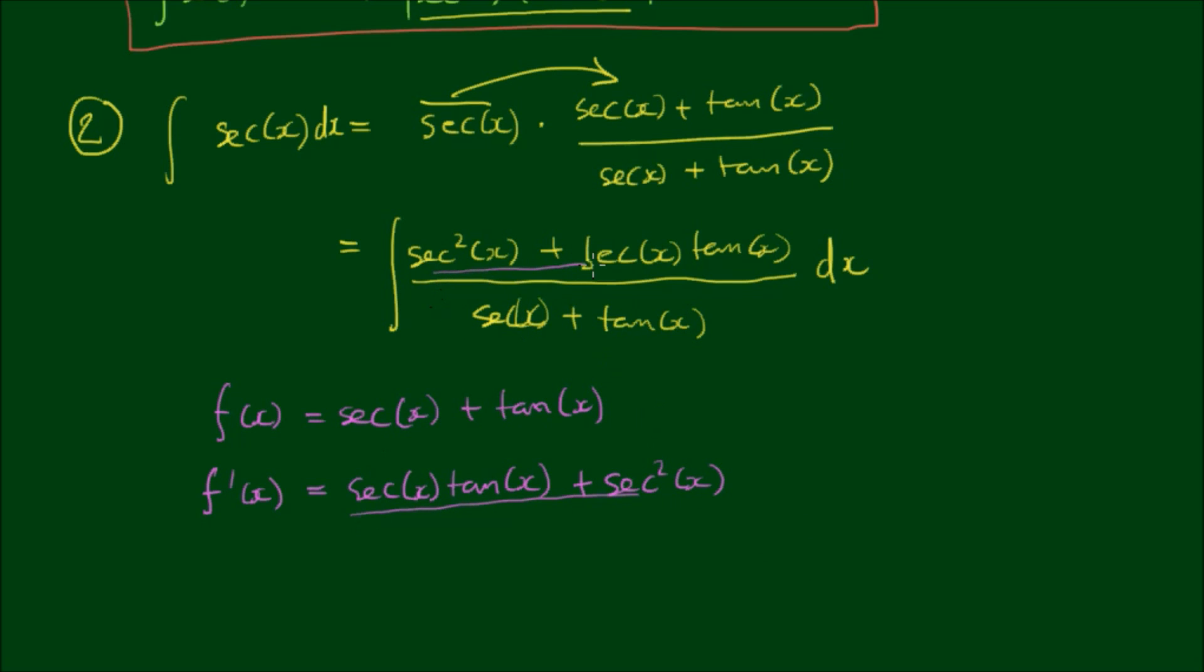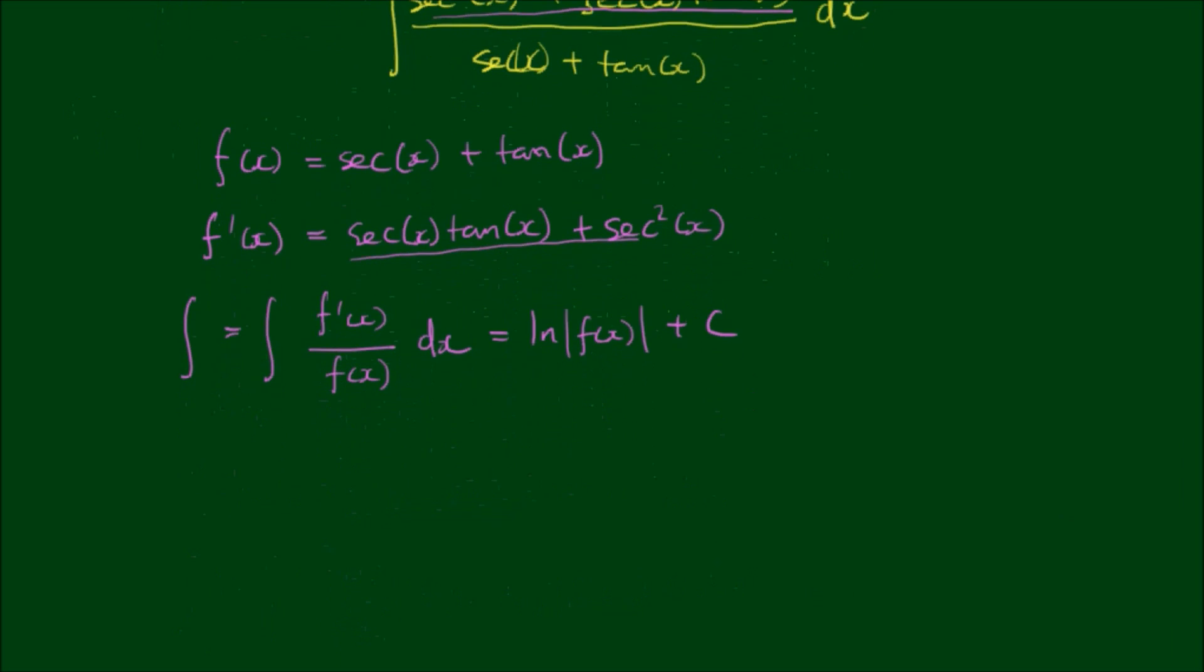So the integral becomes the integral of f prime x on f of x. And integrals of this form always evaluate to the log of f of x plus some integration constant. f we said was equal to sec x plus tan x and then plus the integration constant. So we say that the integral of sec x with respect to x is equal to the log, the natural log of sec x plus tan x plus c.